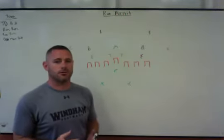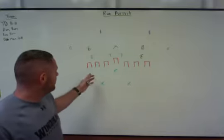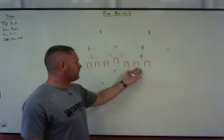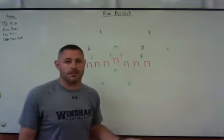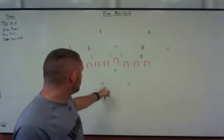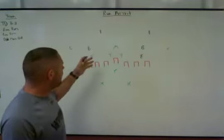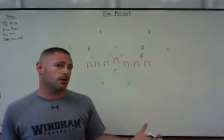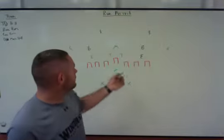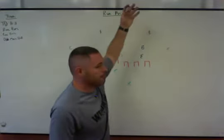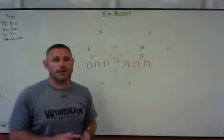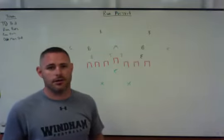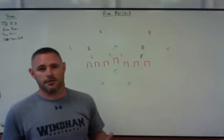Our next drill is our run pursuit drill, set up similarly to our touchdown drill with the cans. We use trash barrels to simulate the offensive line. For this drill I only need two running backs, and I like to have a full defense. If there are more than 11 guys to rotate through, I'll put 13 out there — maybe an extra safety — so we can get as many reps as we can without demanding exactly 11.